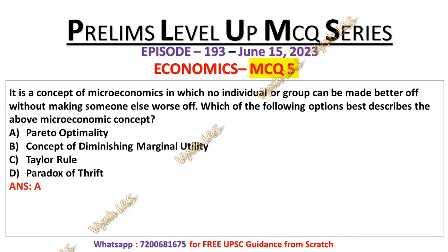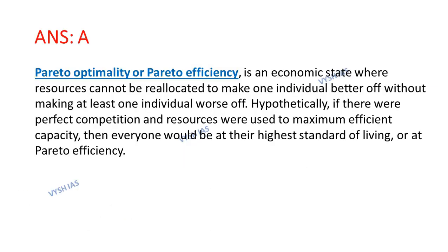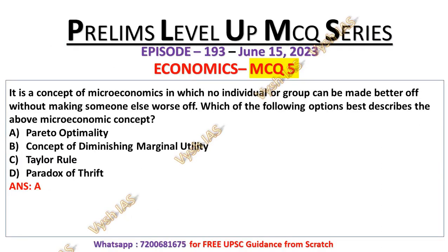The correct answer is option number A, that is Pareto optimality. Pareto optimality or Pareto efficiency is an economic state where resources cannot be reallocated to make one individual better off without making at least one individual worse off. Hypothetically, if there were perfect competition and resources were used to maximum efficient capacity, then everyone would be at the highest standard of living or at the highest Pareto efficiency. That's why option number A is the correct answer.